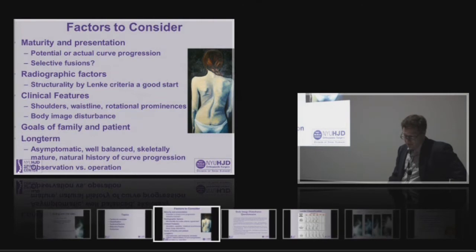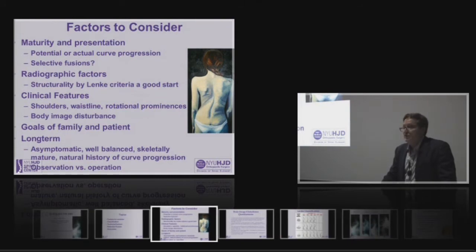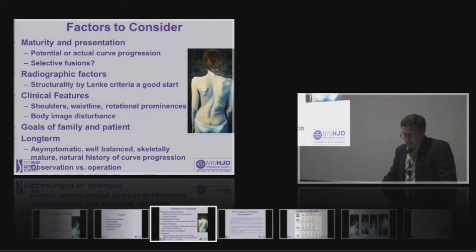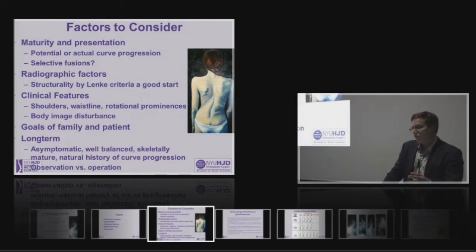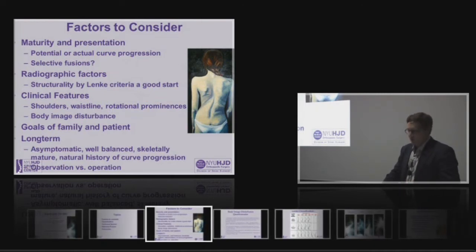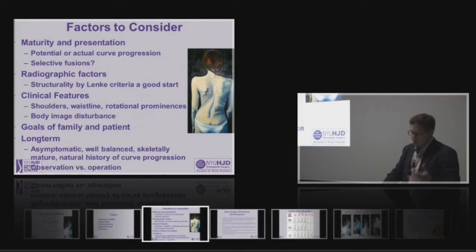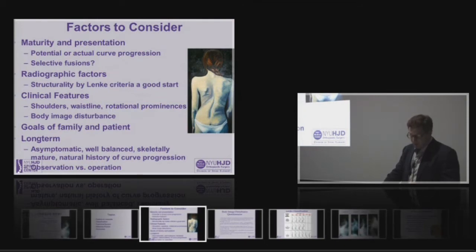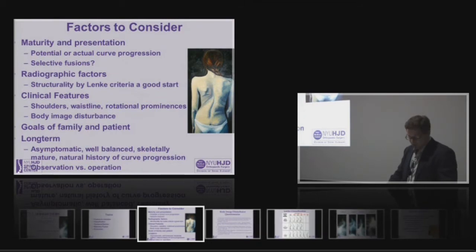Another thing that we talked about today was cosmesis and what the patient's perception of their disease or their disorder is. We can look at radiographic features, we can look at natural history and the potential for disc degeneration. But this is also a psychological disorder. We've looked at that with a body image disturbance questionnaire which helps us get a better understanding of what these kids are going through. It's important in decision making to understand the goals of the patient and their family.